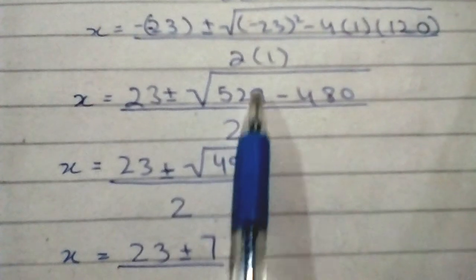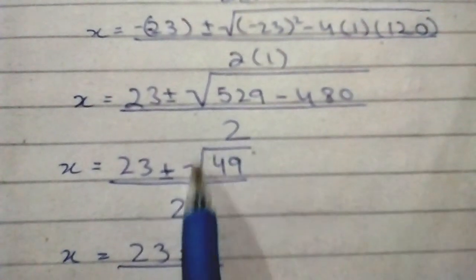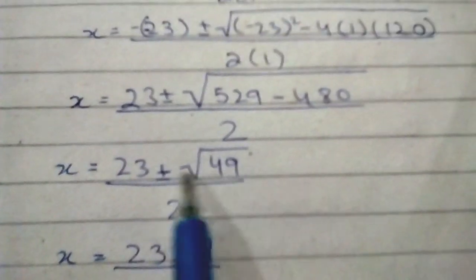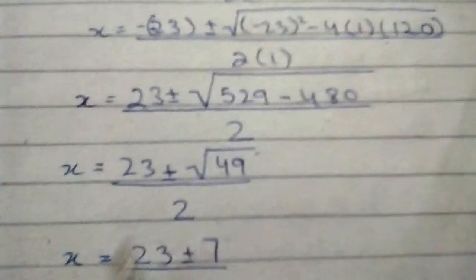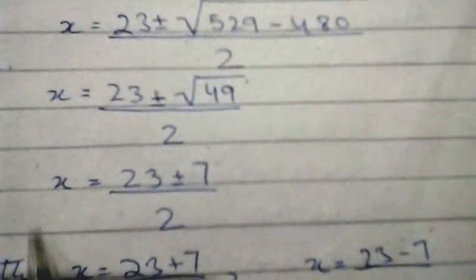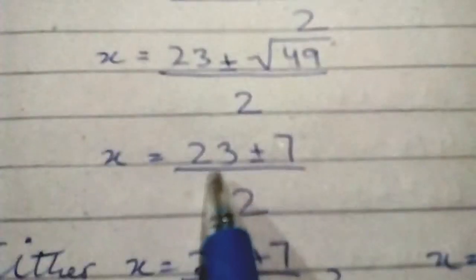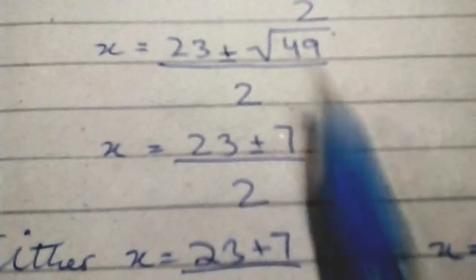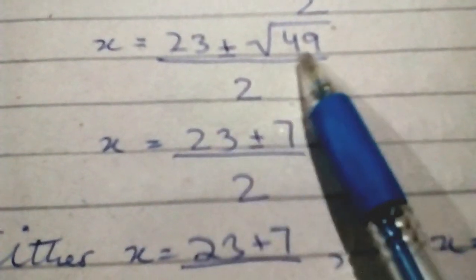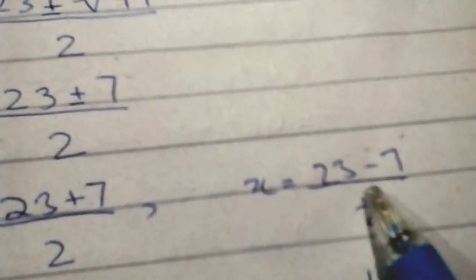So x = (23 ± √49) / 2, which is (23 ± 7) / 2. Either x = (23 + 7) / 2, or x = (23 - 7) / 2.